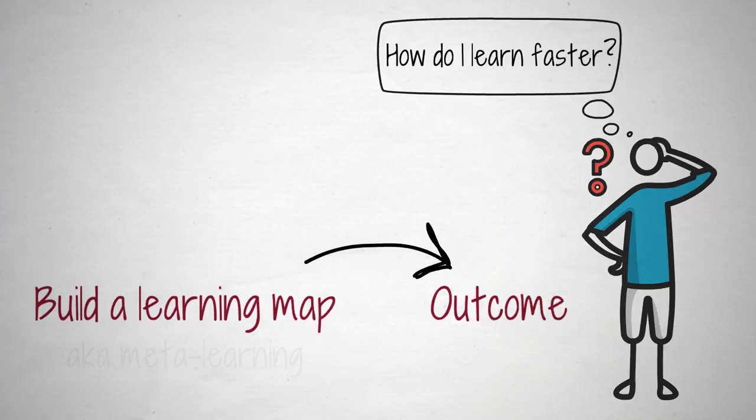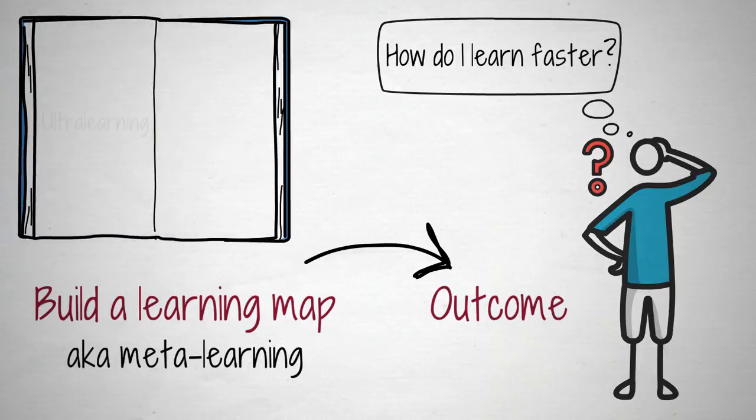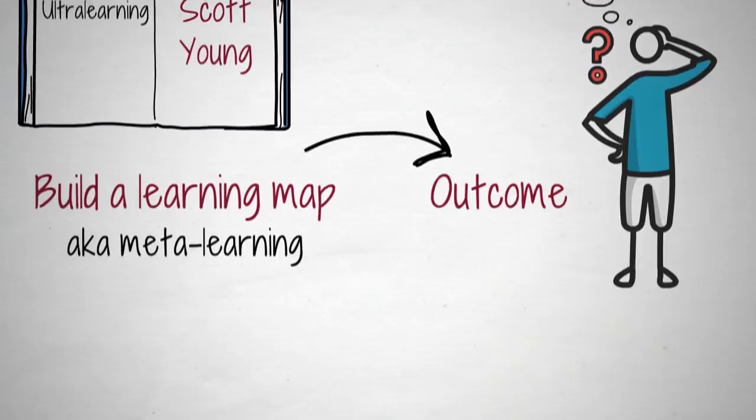This technique of building learning maps is known as meta-learning. Scott Young discusses meta-learning in his book, Ultra-Learning. Many famous entrepreneurs, such as Elon Musk and Gabriel Weinberg, use it.